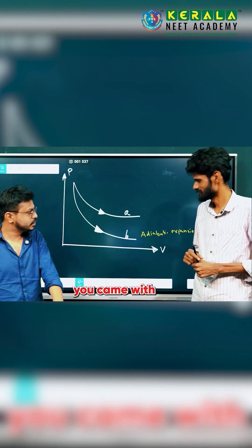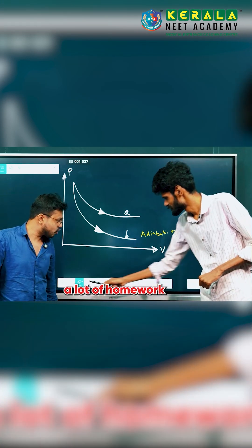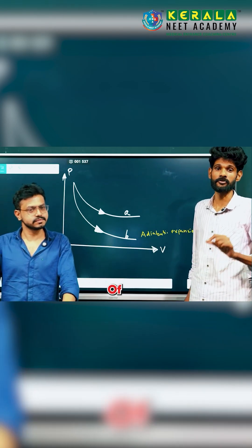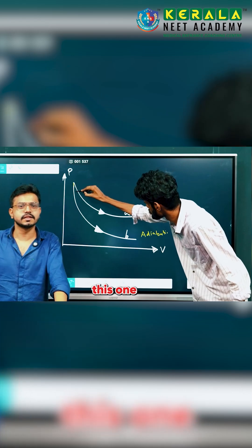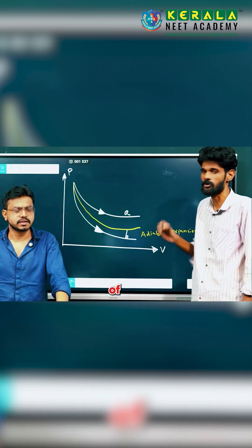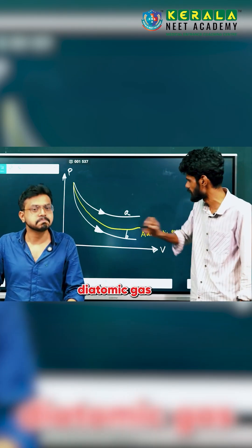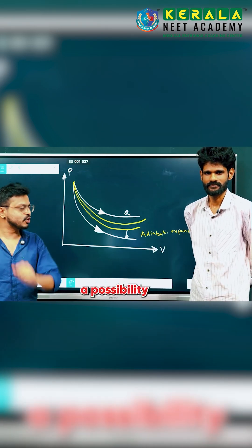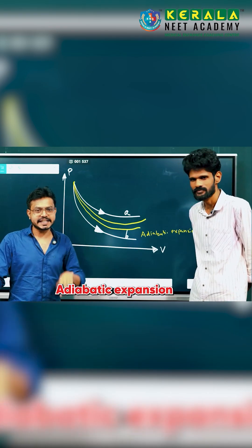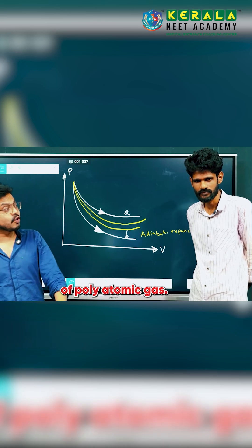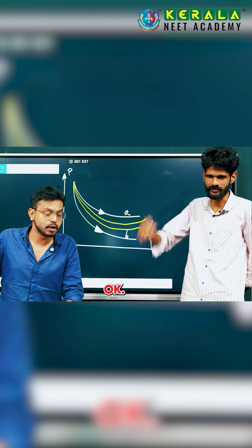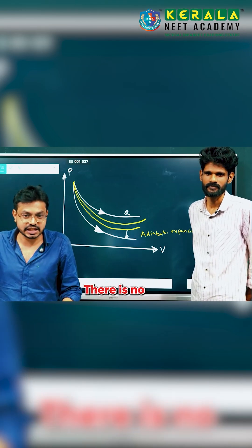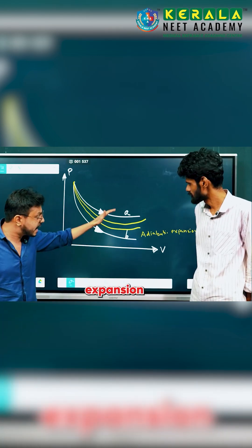Is it always true? Consider graph B as the adiabatic expansion of monatomic gas. This one represents the adiabatic expansion of diatomic gas. This one represents the adiabatic expansion of triatomic gas. So there is a possibility A may be adiabatic expansion of polyatomic gas. This is only if provided as adiabatic expansion — there is no isothermal expansion in the question.